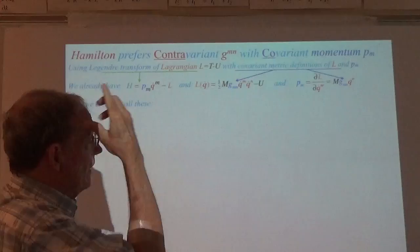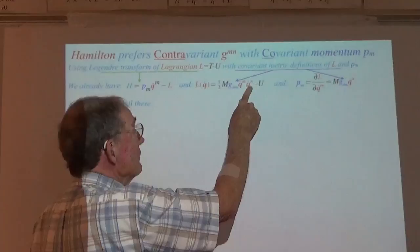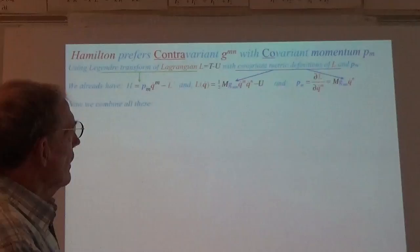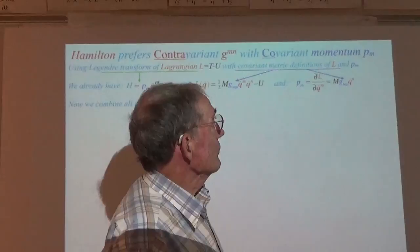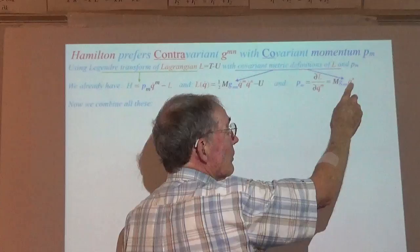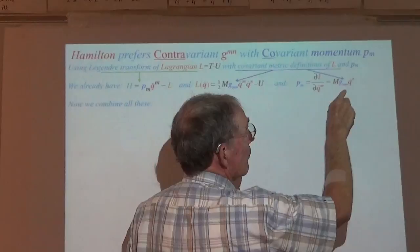The Lagrangian itself is an explicit function of velocity. So here we are faced with that conundrum — I see velocity in the equations for these things. How do we get rid of it? We have this definition of momentum that we already picked up when we talked about the Lagrangian. Here's the metric coefficient — covariant metric — summing over all of the coordinate velocities to give me momentum component M.